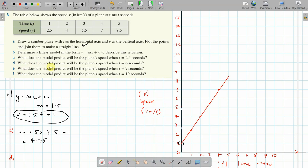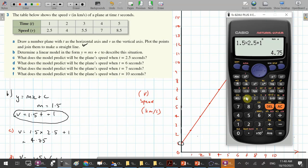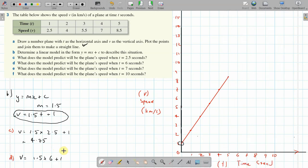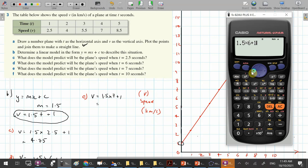Part d: what does the model predict will be the plane speed when t equals 6? We're looking above 9, so velocity equals 1.5 times 6 plus 1, which equals 10. Part e: what does the model predict when t equals 7? We'll just keep substituting. 1.5 times 7 plus 1 equals 11.5.